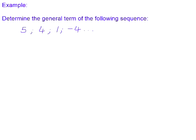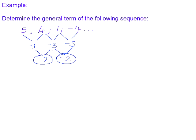Let's take a look at an example. Determine the general term for the following sequence: 5, 4, 1, negative 4. Whenever you're faced with a sequence, our first job is to find the differences. To get from 5 to 4, we subtract 1. To get from 4 to 1, we subtract 3. To get from 1 to negative 4, we subtract 5. The first difference is not constant, so we find the second difference: from negative 1 to negative 3 we subtract 2, and from negative 3 to negative 5 we subtract 2. The constant second difference confirms this is a quadratic sequence with general term an squared plus bn plus c.